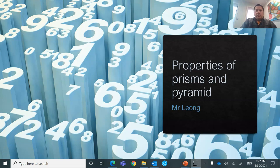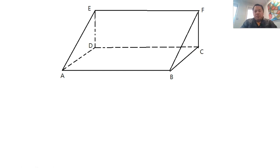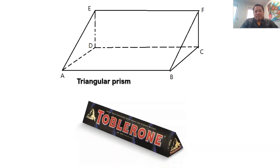Hi students, how are you doing? Today we will be going through some of the properties that you have learned in the past on prisms and pyramids. So I'm sure most of you know the name of this shape appearing on your screen — it's known as a triangular prism. One of the famous objects that we can find in the supermarket is the Toblerone chocolate, which is actually one of my favorite chocolates, and it's the shape of a triangular prism.